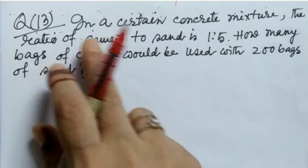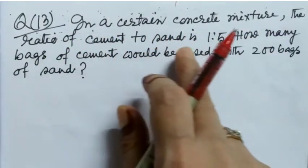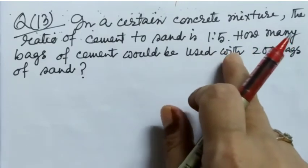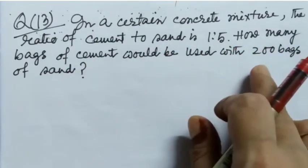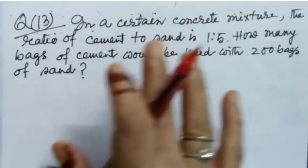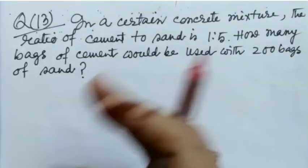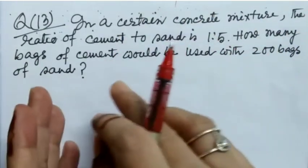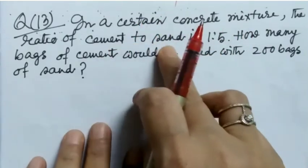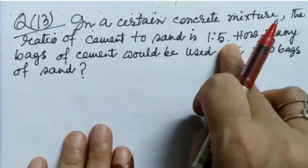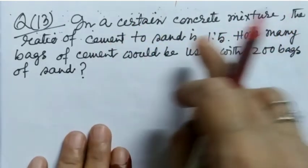Question number 13, in a certain concrete mixture, the ratio of cement to sand is 1 is to 5. How many bags of cement would be used with 200 bags of sand? Here this concept of proportion we are using to make the mixture of cement and sand. We know 1 to 5, that means 1 bag of cement, 5 bag of sand.